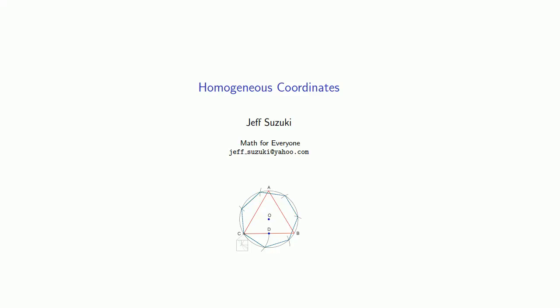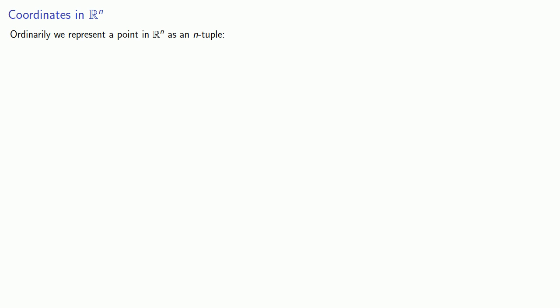We can extend the use of transition matrices through the use of homogeneous coordinates. Ordinarily, we represent a point in Rn as an n-tuple.